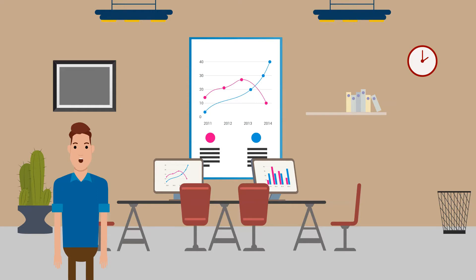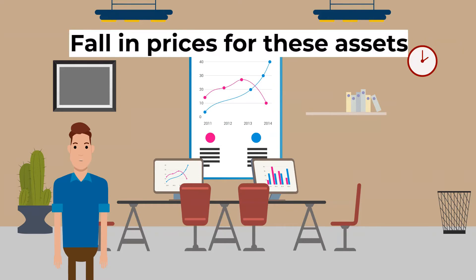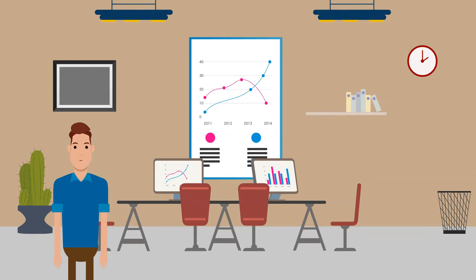Second, since fewer people are borrowing and more are saving, there is a fall in demand for assets such as stocks, shares, and government bonds, leading to a fall in their prices. Therefore, consumers will experience a negative wealth effect since the value of their assets falls, which will lead to a fall in consumption. Moreover, investment is less attractive since firms are likely to see lower profits if prices fall. Aggregate demand falls because of the fall in consumption and investment.